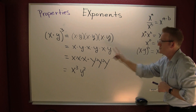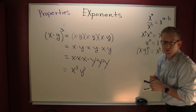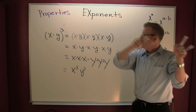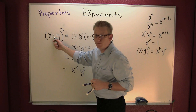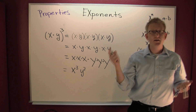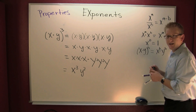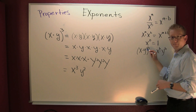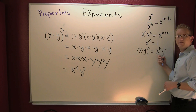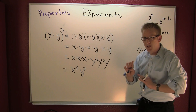Some people say this property is like distribution — it is not distribution. Distribution is multiplication over addition; this has no addition. It feels like distribution, so I call it 'dis.' If you see something like that product raised to a power, you apply the exponent to each factor — bam, bam — and you have x to the b times y to the b. But to be clear: this is not distribution.